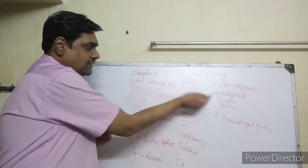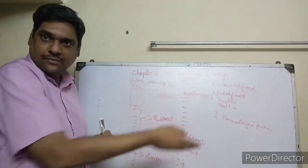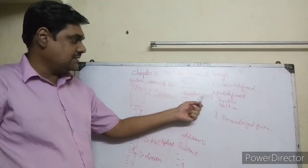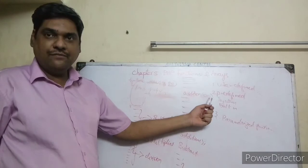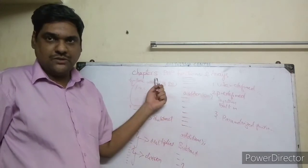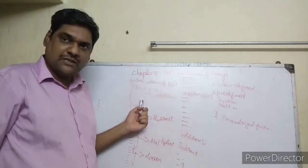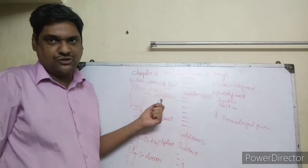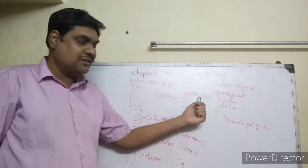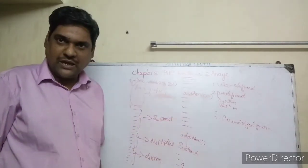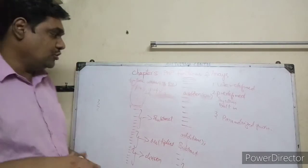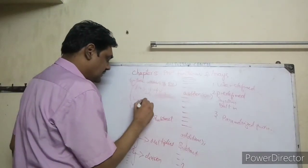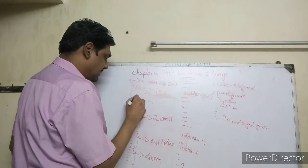But if the function caller gave two values and wants the addition result back, the function should return the answer. For example, if the result is 15, you should use the return statement to send the value back to the caller.